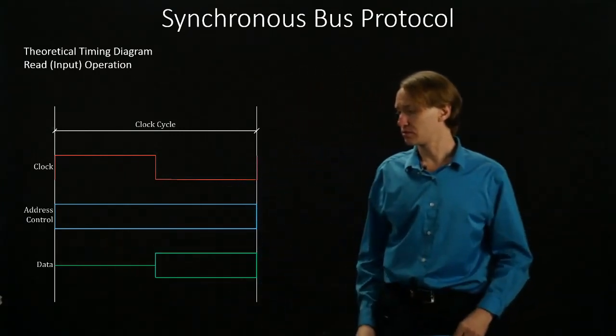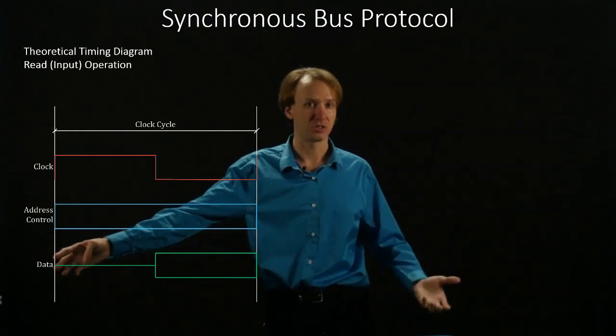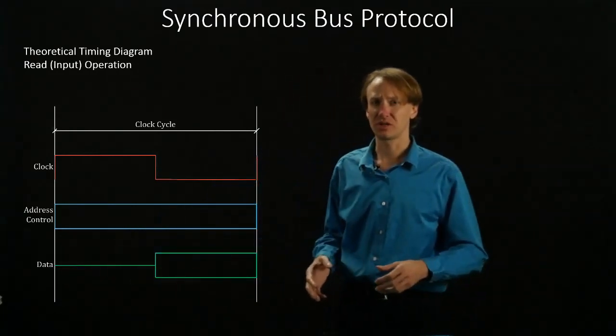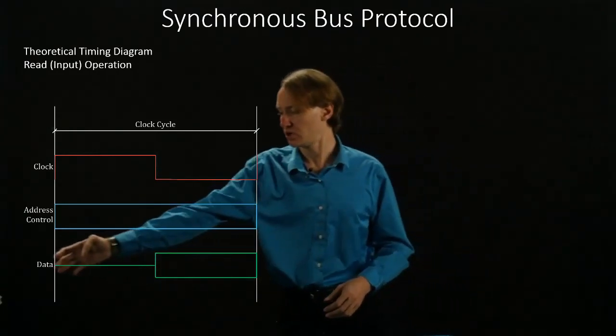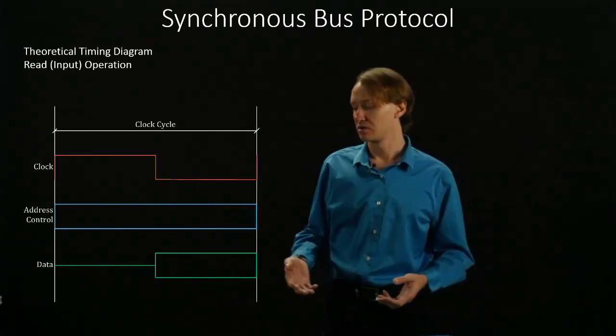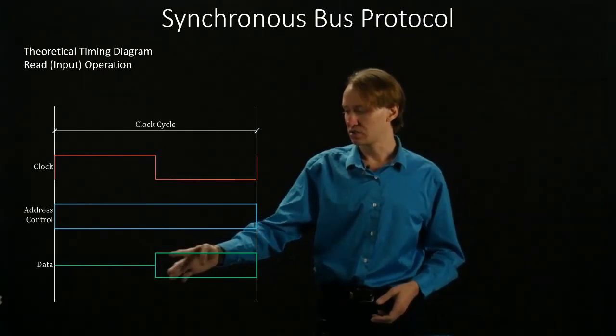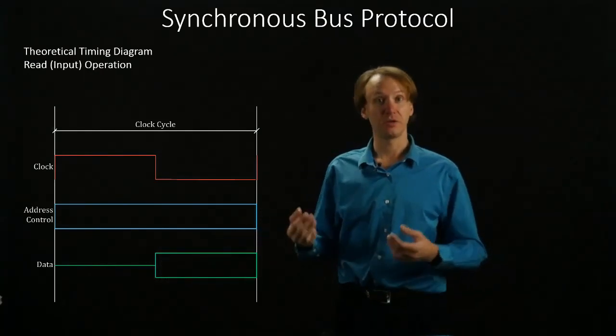The data, on the other hand, is a little different. It's initially in some unknown state. We're not actually interested in what that state is. We just know that it's not useful. Once we get halfway through the clock cycle, the slave device has produced the data, it's put it on the bus, and now it's in a useful state that the CPU could read.